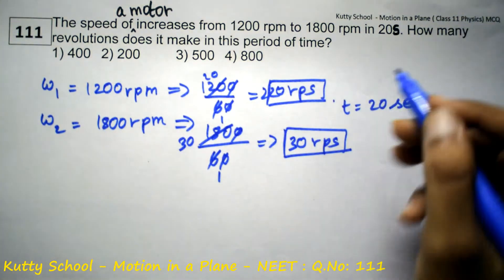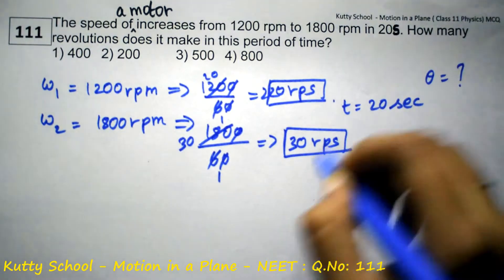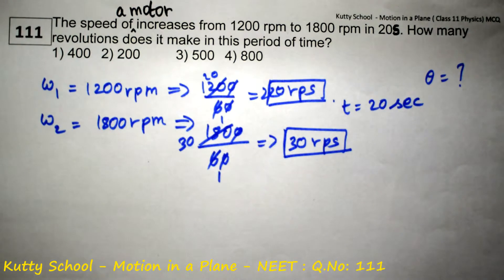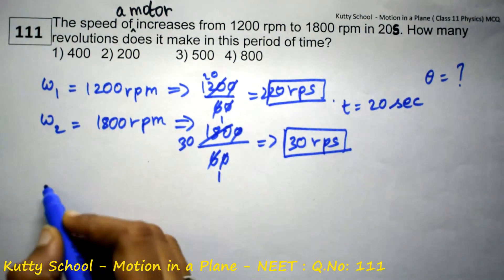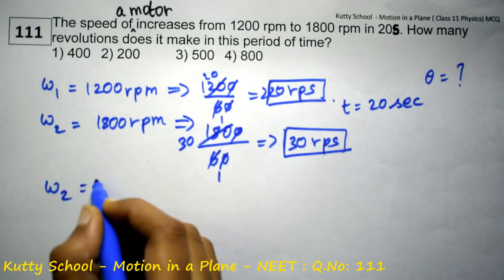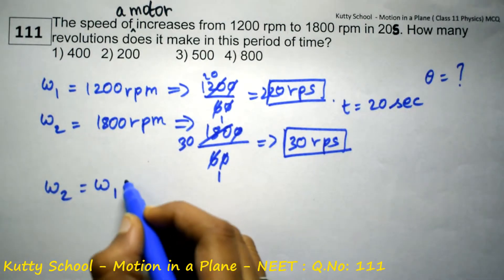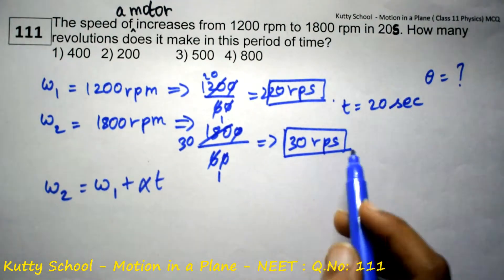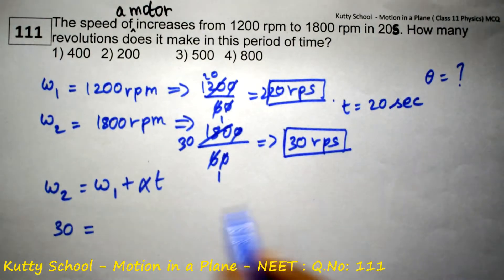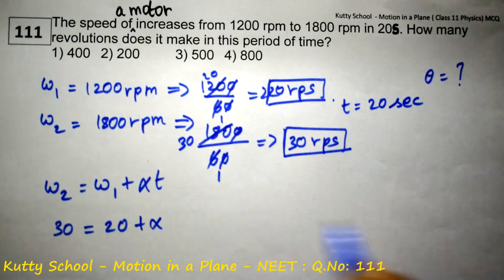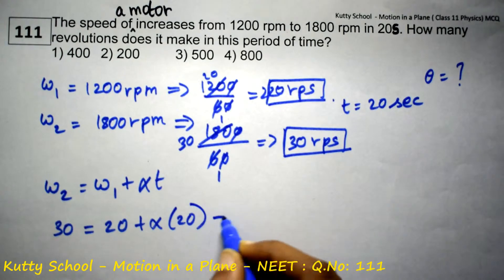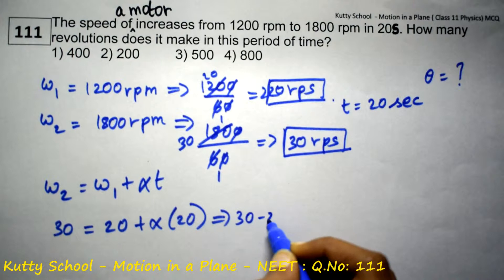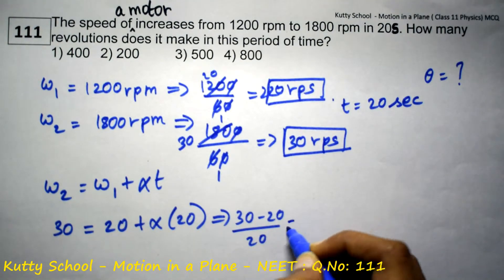So, revolutions, the number theta. Theta is equal to what? In the time period, we will calculate the revolutions. We will see how many revolutions there are. So, it becomes 30 minus 20 by 20 is equal to alpha.